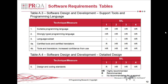In another table, Table A4, we have software design and development detail design. One of the entries in this table, number five, is that you should use design and coding standards. This is recommended for SIL level one, but highly recommended for all the higher safety integrity levels. This entry in Table A4 points to another table within another annex which gives more detail on what your design and coding standards should include.